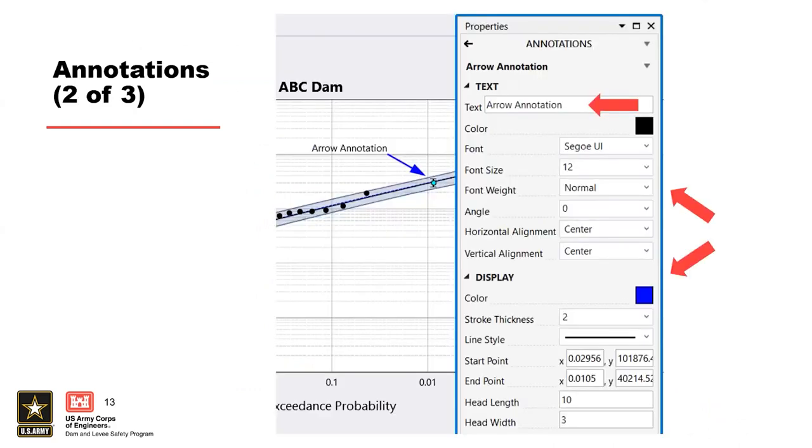Edits to the annotation can be made in the properties window. You can change the text and update the text formatting, and you can also update the formatting for the arrow itself if you used an arrow annotation.